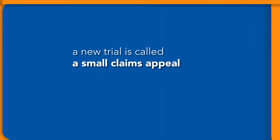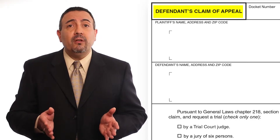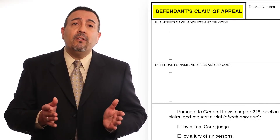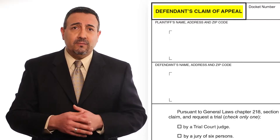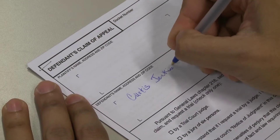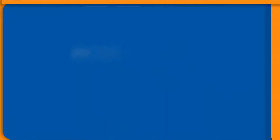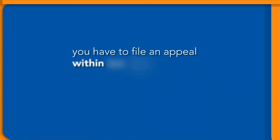The new trial is called a small claims appeal. To get a small claims appeal, you file a form called the defendant's claim of appeal. You have to file this form within 10 days of being notified that you lost. Your notice of appeal tells the court what part of the court's decision you disagree with.